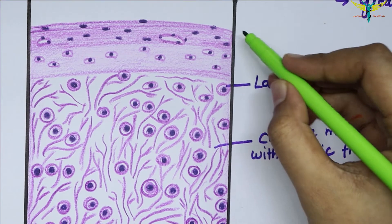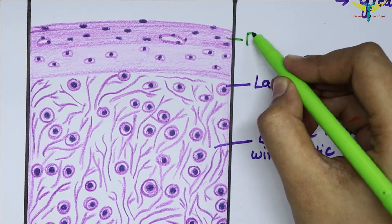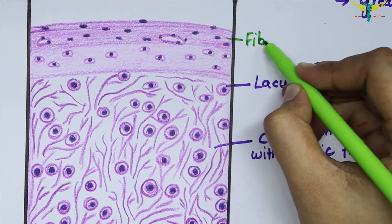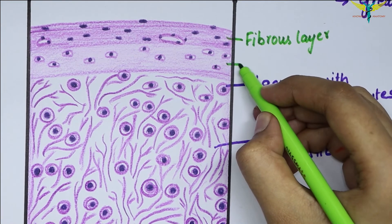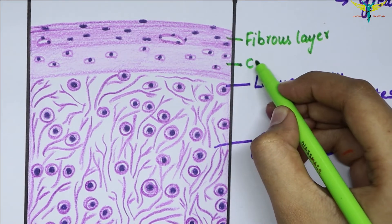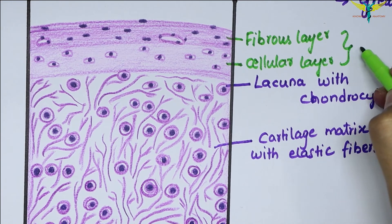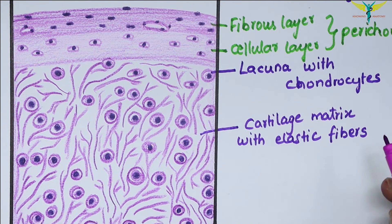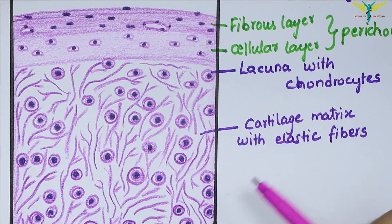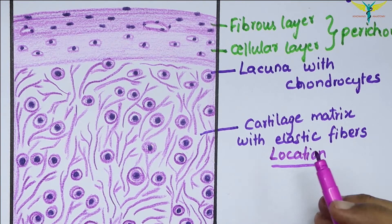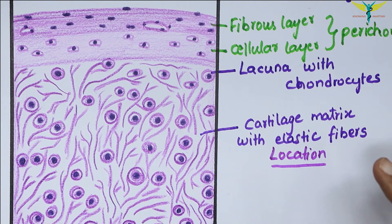The perichondrium is present in the elastic cartilage and shows an outer fibrous layer and an inner cellular layer. This whole structure is the perichondrium — this is the outer fibrous layer and this is the inner cellular layer — and both together constitute the perichondrium.